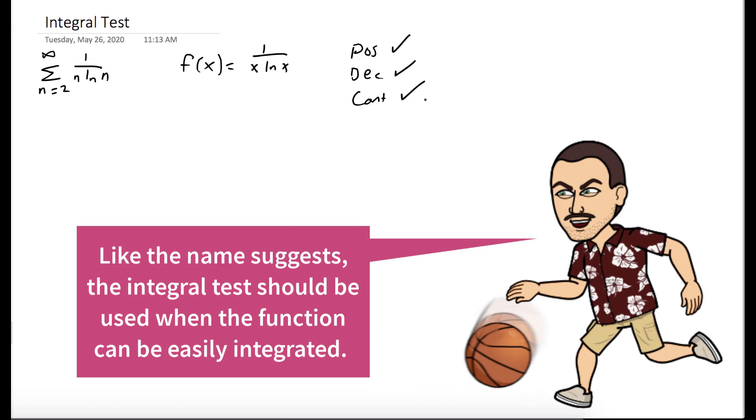And so maybe you might need to show a little bit of work to show it's decreasing, but just trust me for now. The denominator is increasing, so the function will be decreasing. So we want to evaluate the improper integral, the integral from 2 to infinity of 1 over x ln x dx.